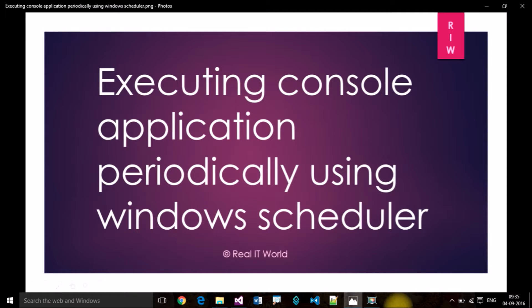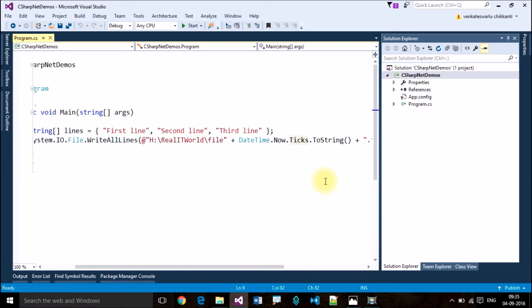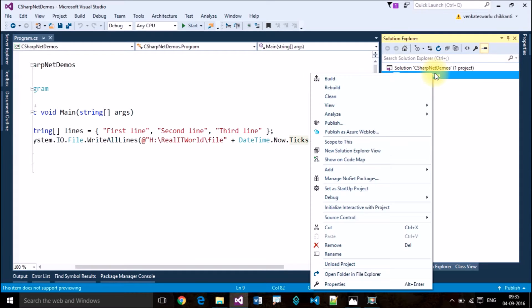Welcome to Reality World. Now we are going to learn about how to execute a console application periodically using Windows Scheduler. For that, we first need to create our console application. Make sure that your application is configured as a console application.